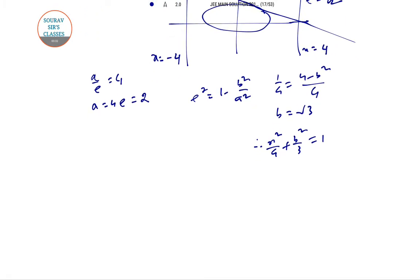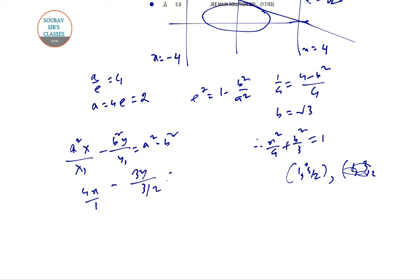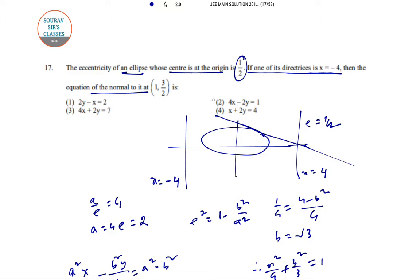The equation of the normal at 1 comma 3 by 2. At 1 comma 3 by 2, it will be a square x by x1 minus b square y by y1 equals a square minus b square. So 4x by 1 minus 3y by 3 by 2 equals 4 minus 3. So 4x minus 2y equals 1. The answer is option number 2.